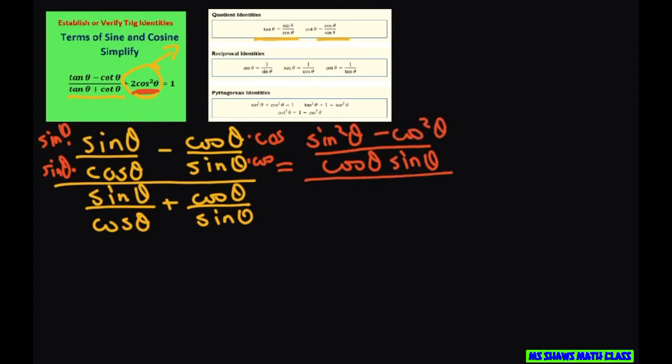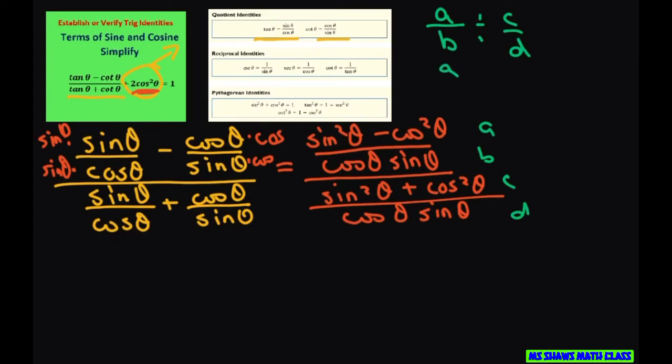And then we have cosine theta sine theta. Now, what happens is if you have a divided by b divided by c divided by d, this equals a/b times d/c. So what happens when you do that is you can just cancel these two because they're going to single out, and this will cancel out.